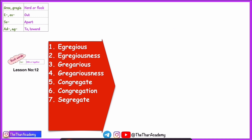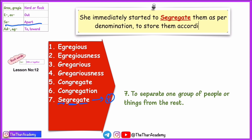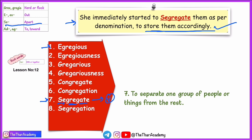Similarly, 'segregate.' The suffix '-gate' is the same — as I mentioned, this suffix normally forms verbs. The prefix 'seg' means apart, away from the group. So 'segregate' means to separate one group of people or things from the rest — to move something away from the group. Note that segregate is not necessarily a negative word. For example: 'She immediately started to segregate the coins as per denomination to store them accordingly.' The noun form is 'segregation,' formed by adding '-ion' at the end.